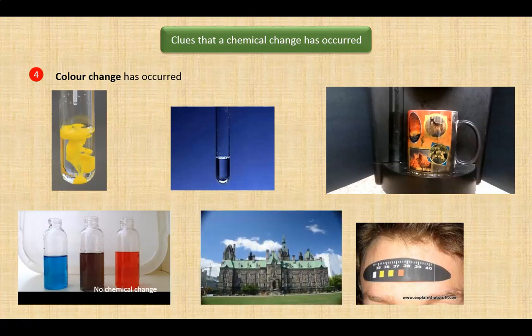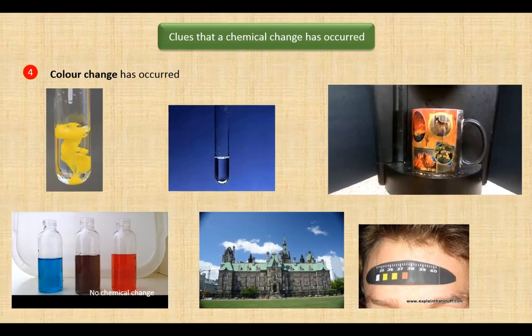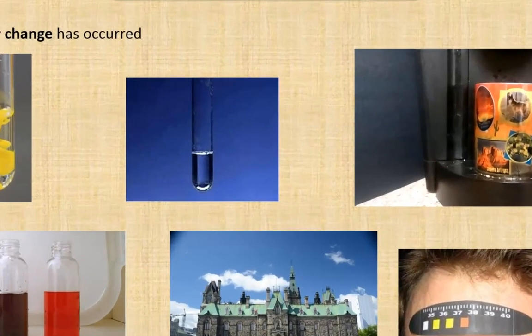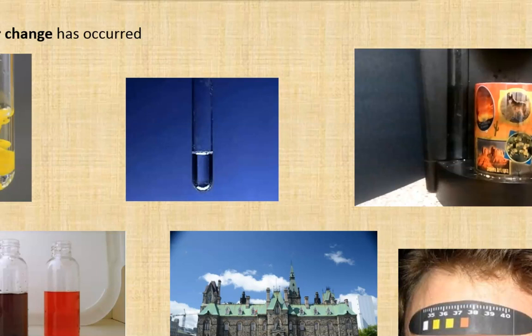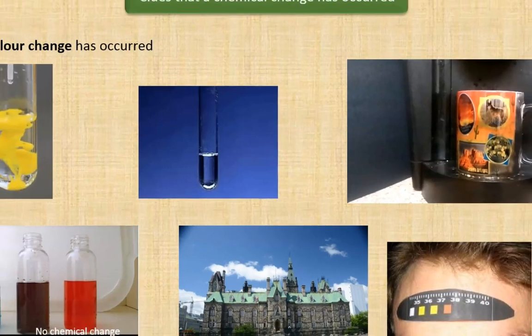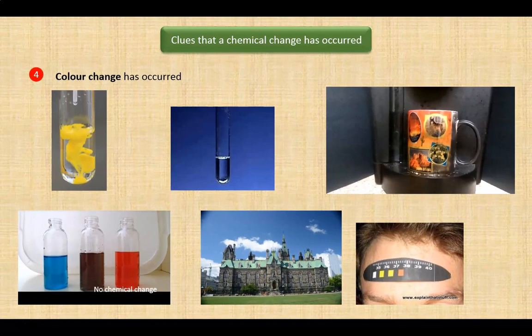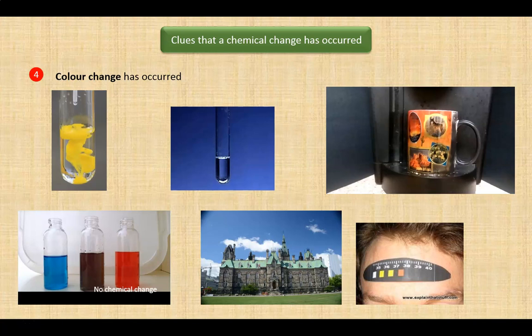One more. The green color that forms on copper roofs, called patina, indicates a chemical change occurring over a long time. The reaction is between the copper of the roof and the moisture and carbon dioxide in the air. So again, this is why we use the word clue, because clues are indicators rather than guarantees of chemical changes.